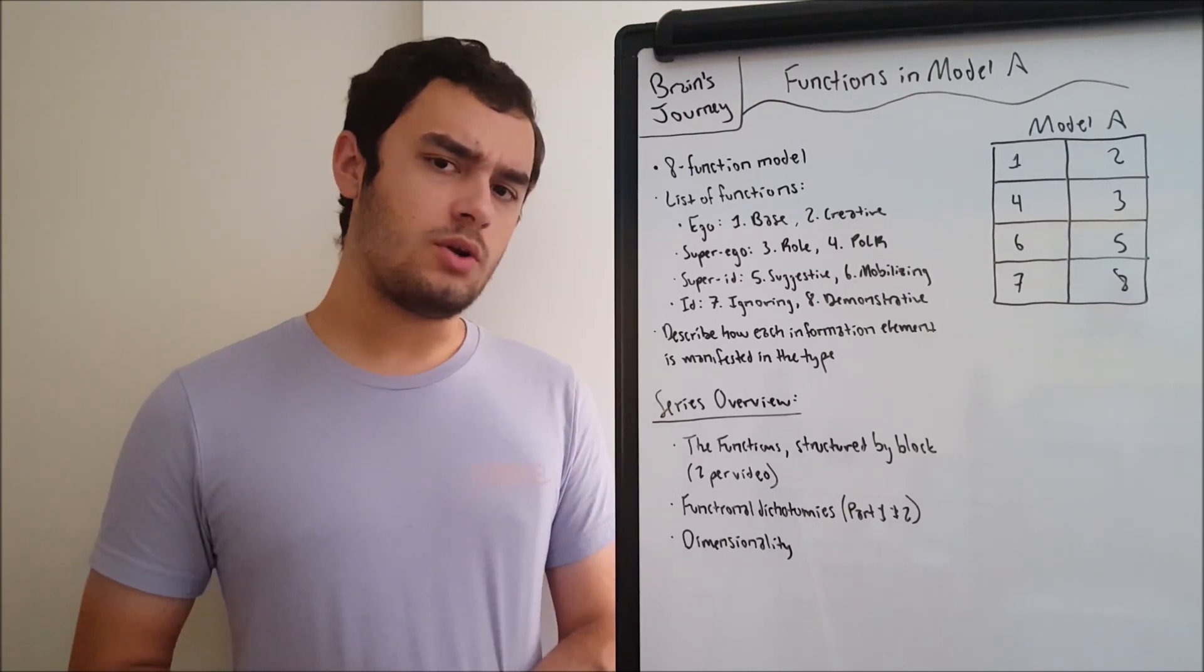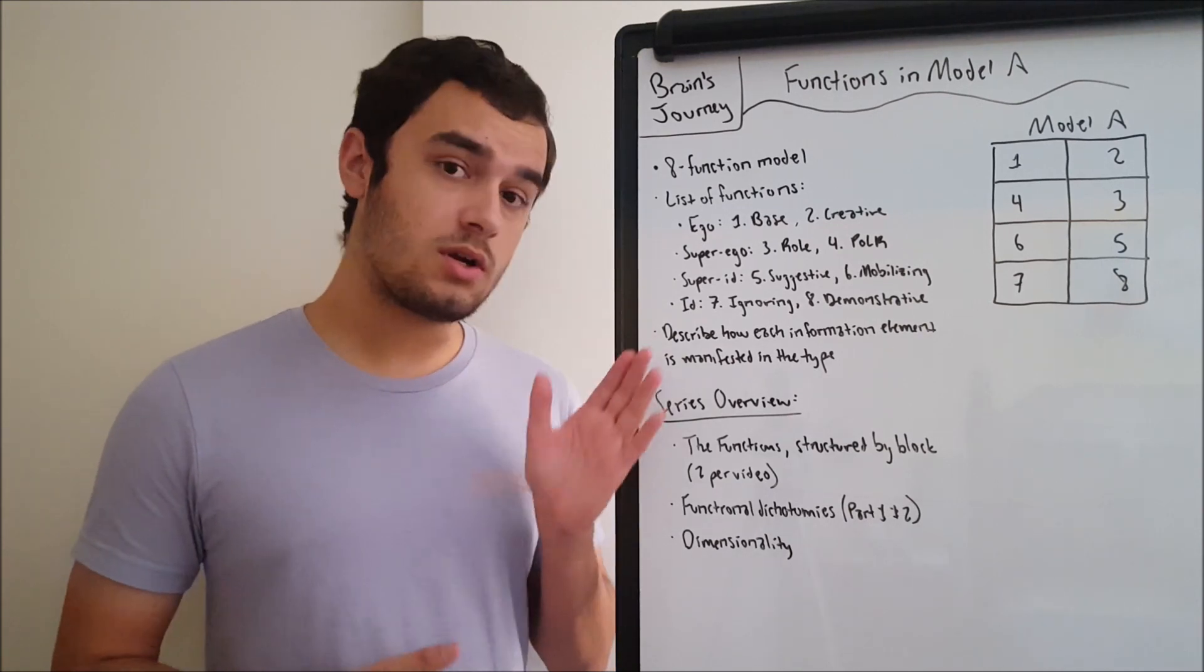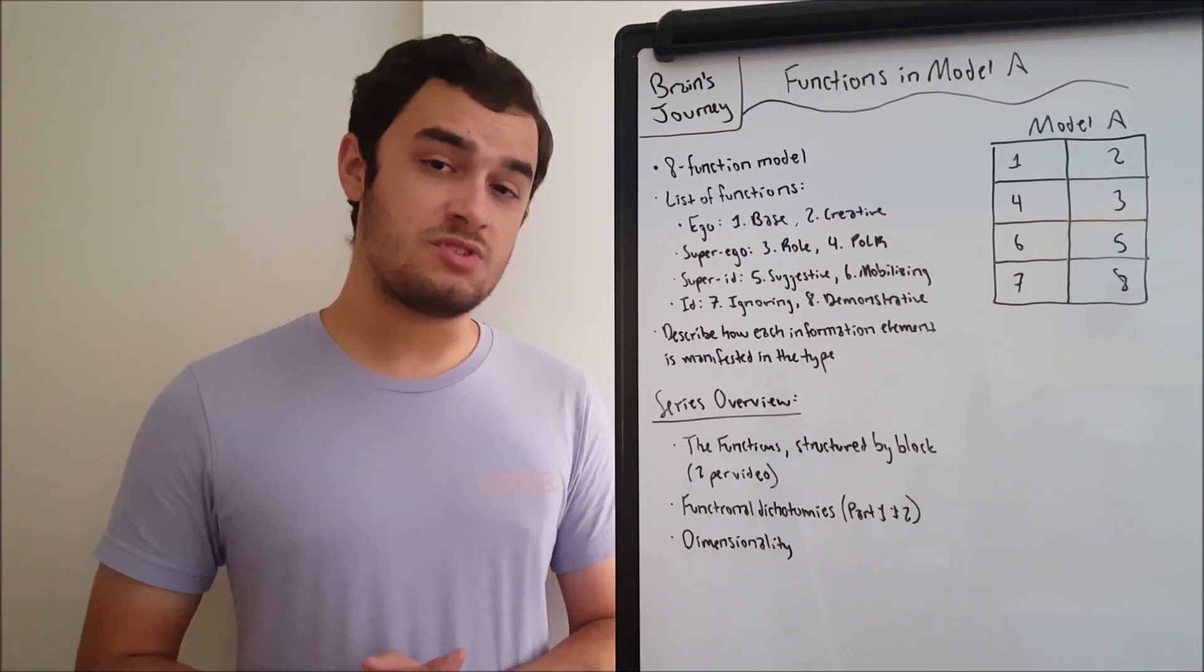Then there's the super ego block with function number three, the role, and function number four, the polar, otherwise known as the point of least resistance.